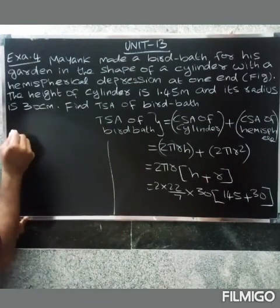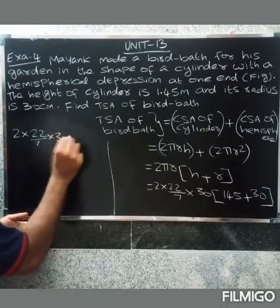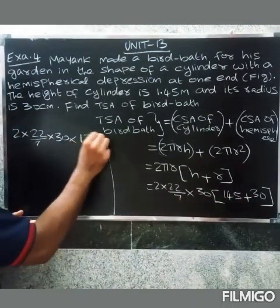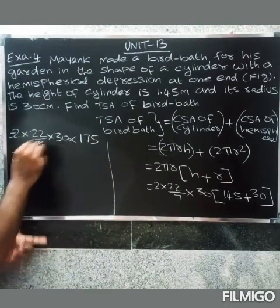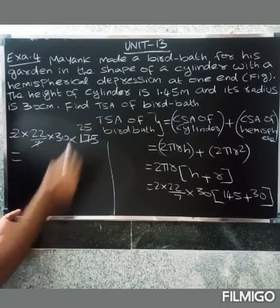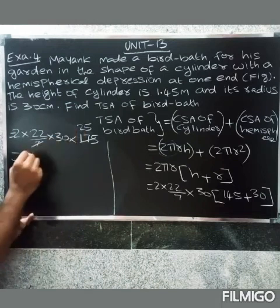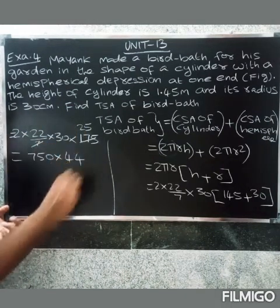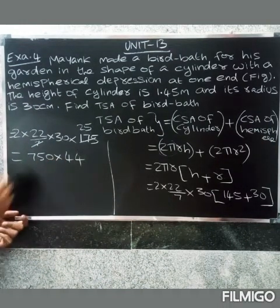2 × 22/7 × 30 × (145 + 30). I'll cancel: 2 and 14 gives 7, remainder 3. So 30 × 44, the answer is 33,000.